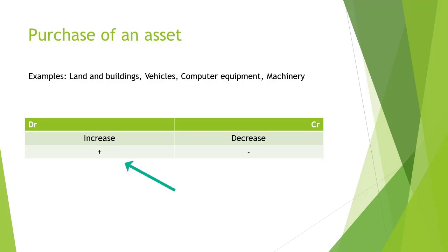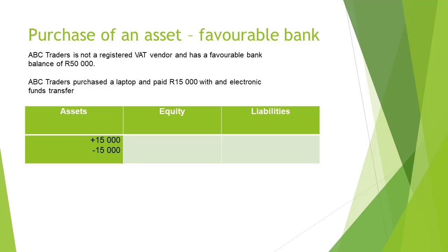the account will increase on the debit side and decrease on the credit side. Let's look at an example.